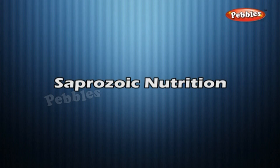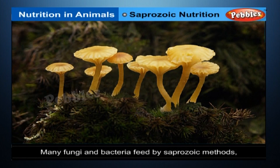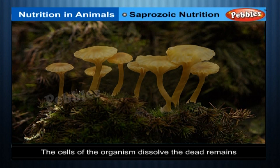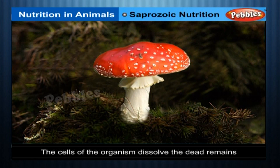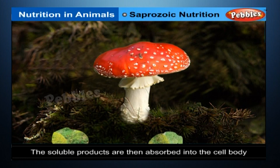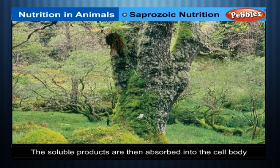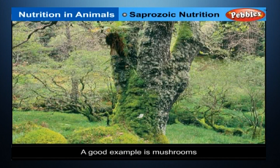Saprozoic Nutrition. Many fungi and bacteria feed by saprozoic methods. The cells of the organism dissolve the dead remains of living organisms by secreting chemicals. The soluble products are then absorbed into the cell body. A good example is mushrooms.